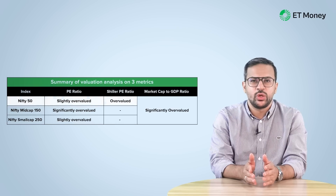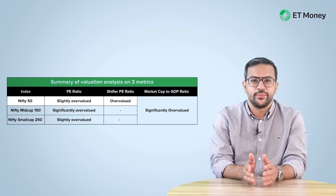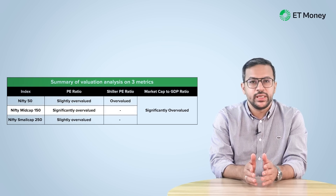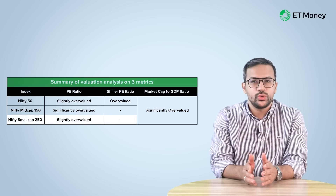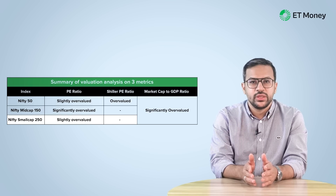Combining our findings from the three metrics: first, large cap stocks are trading slightly above their long-term PE, but the extent of overvaluation is not very high. Second, mid-cap stocks are definitely overvalued and currently trading in the overheated category — this could also be contributing to the country's high market cap to GDP ratio. Lastly, small cap stocks also trade at above-average valuations; however, like large caps, the extent of overvaluation is not very high.